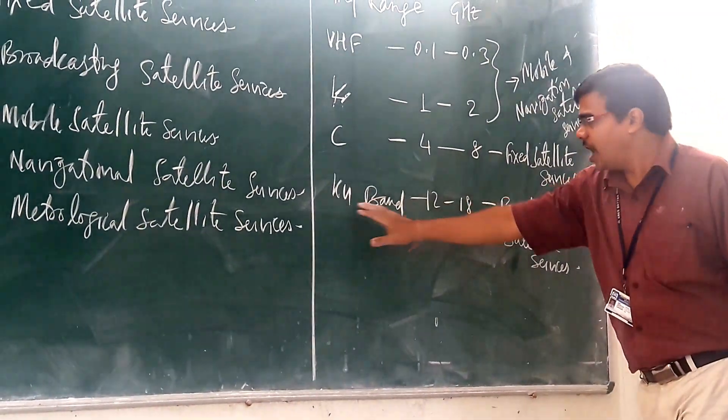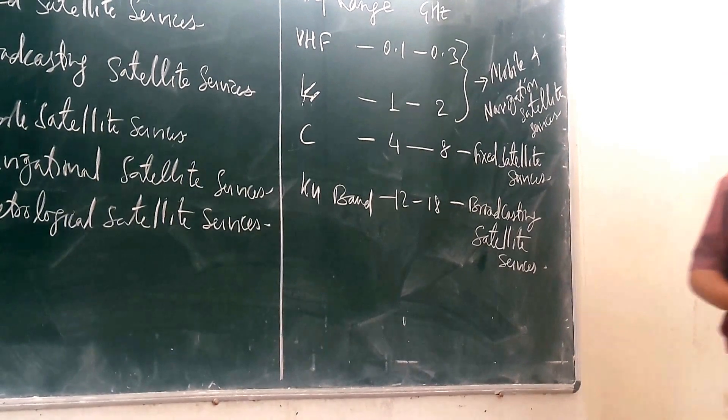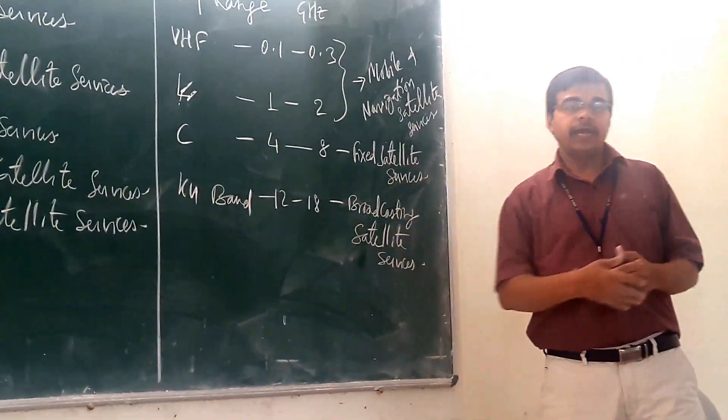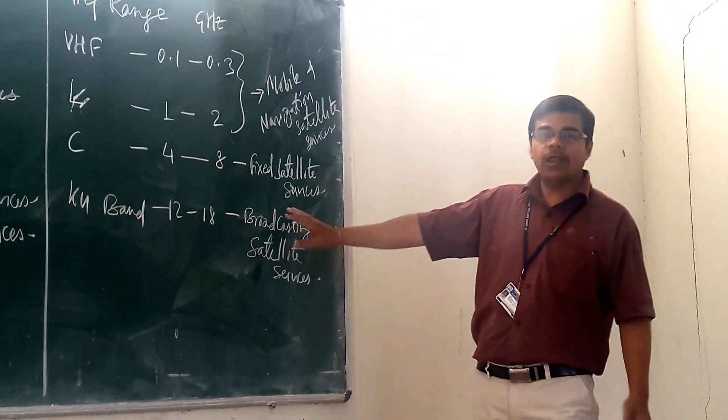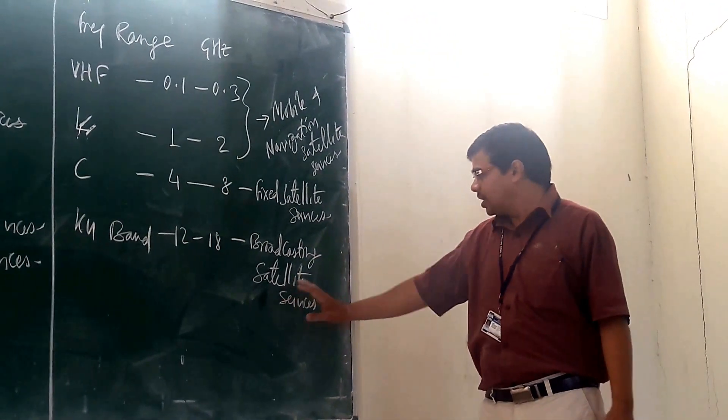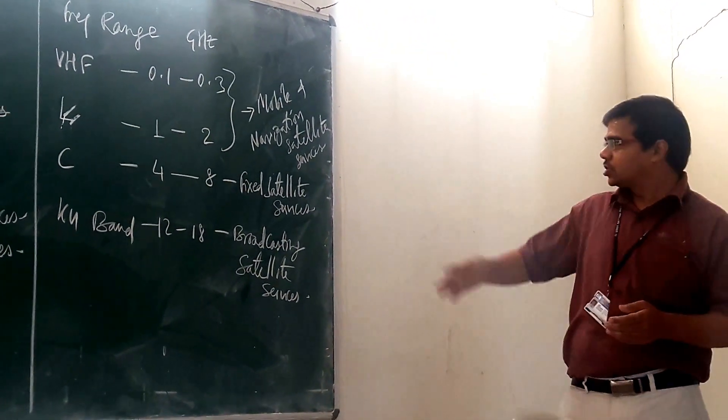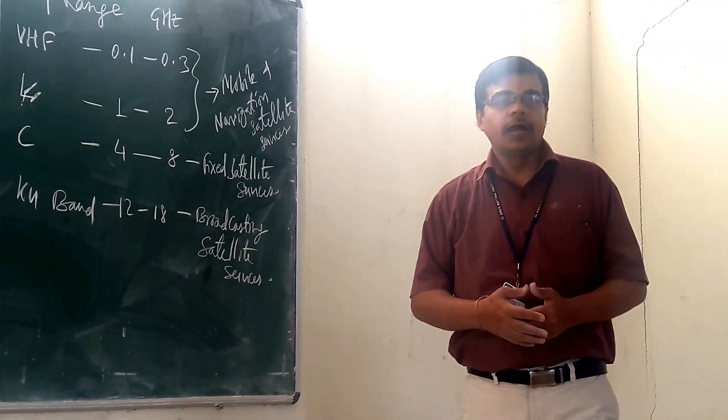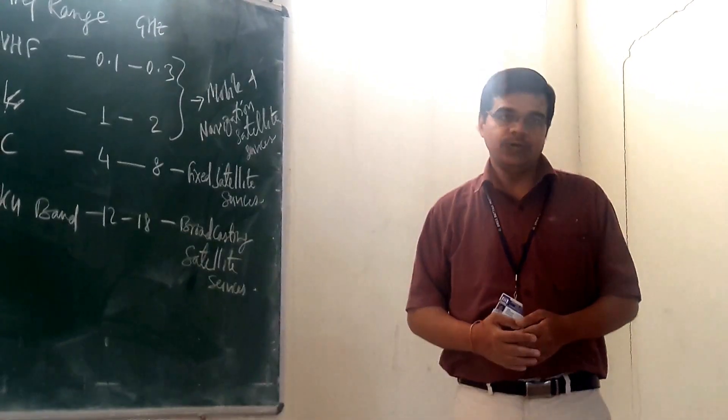And they have also kept the KU band under K. KU means under K. KU band that is from 12 to 18 gigahertz, and they have allotted it for the broadcast satellite services. So these are some of the classification that is done by your International Telecommunication Union.